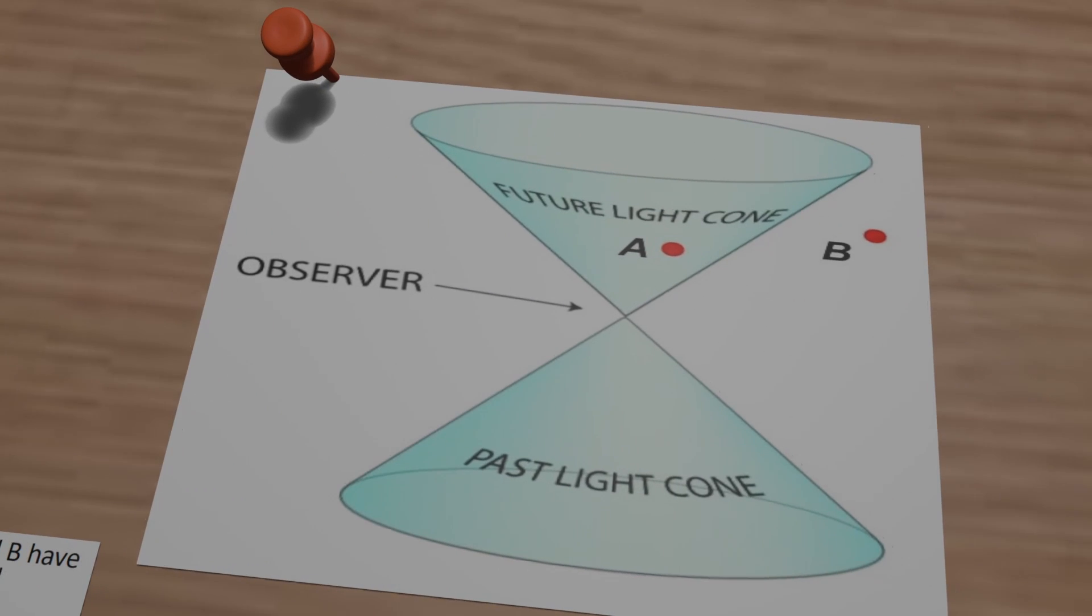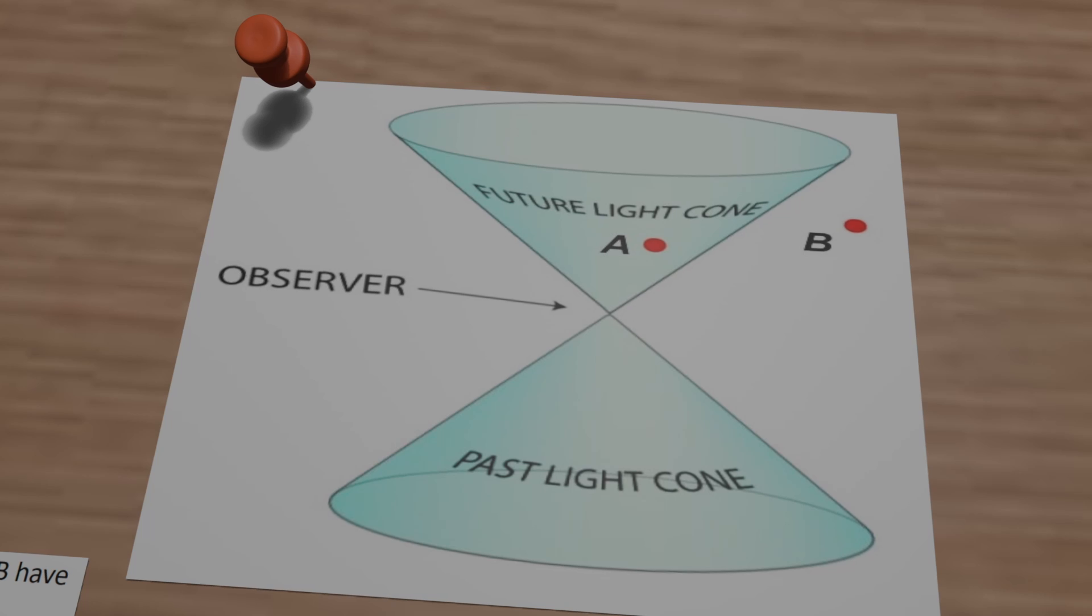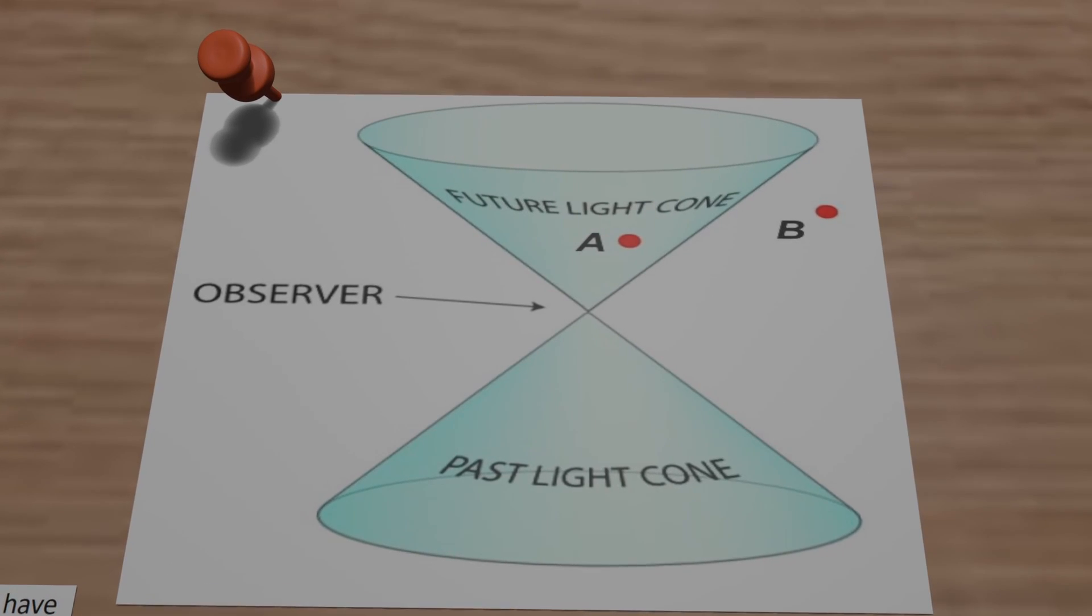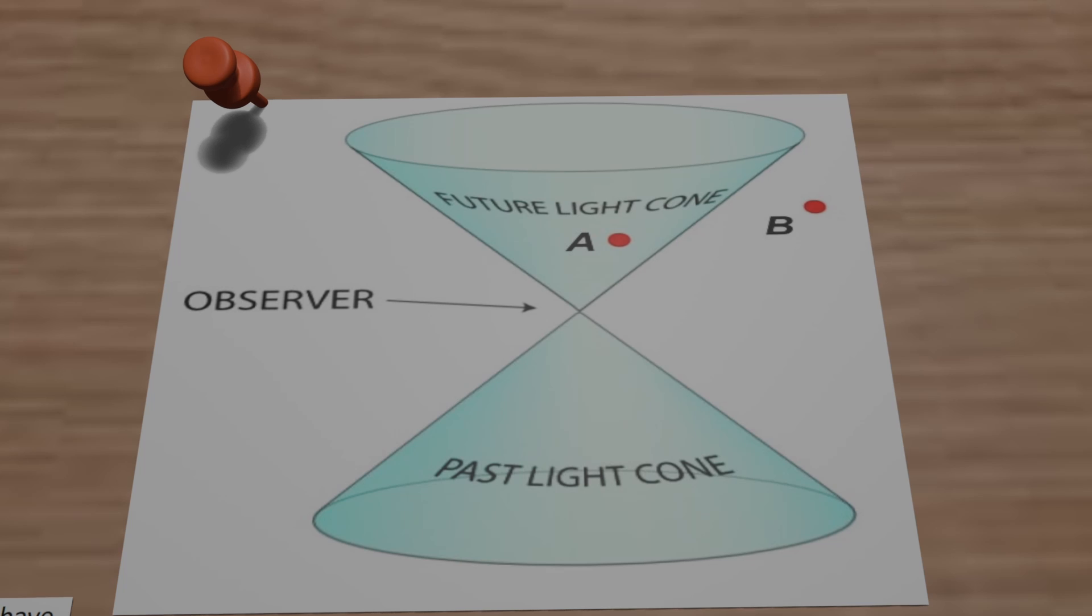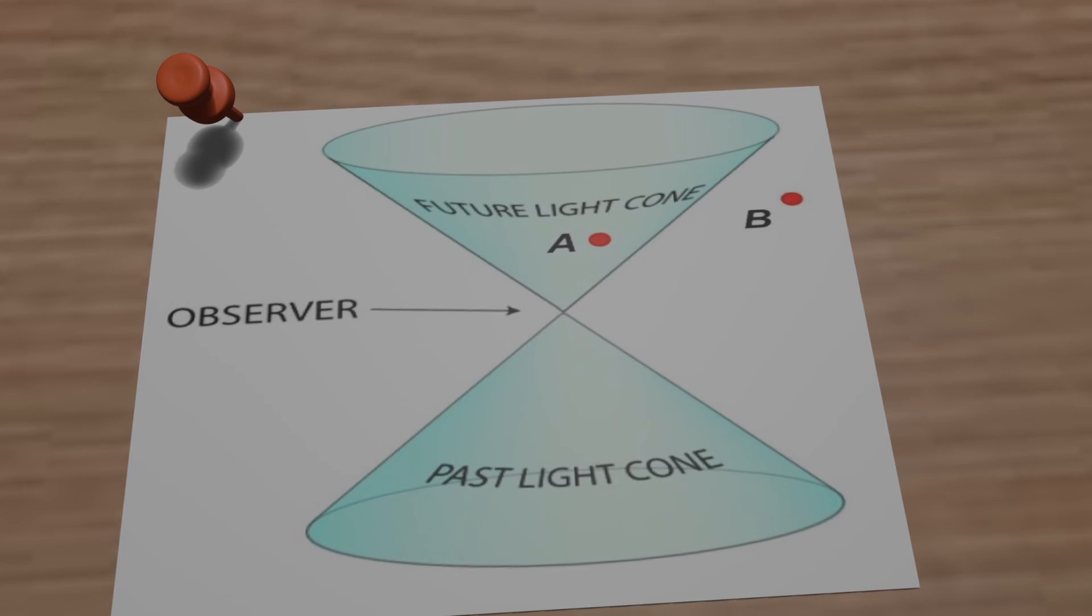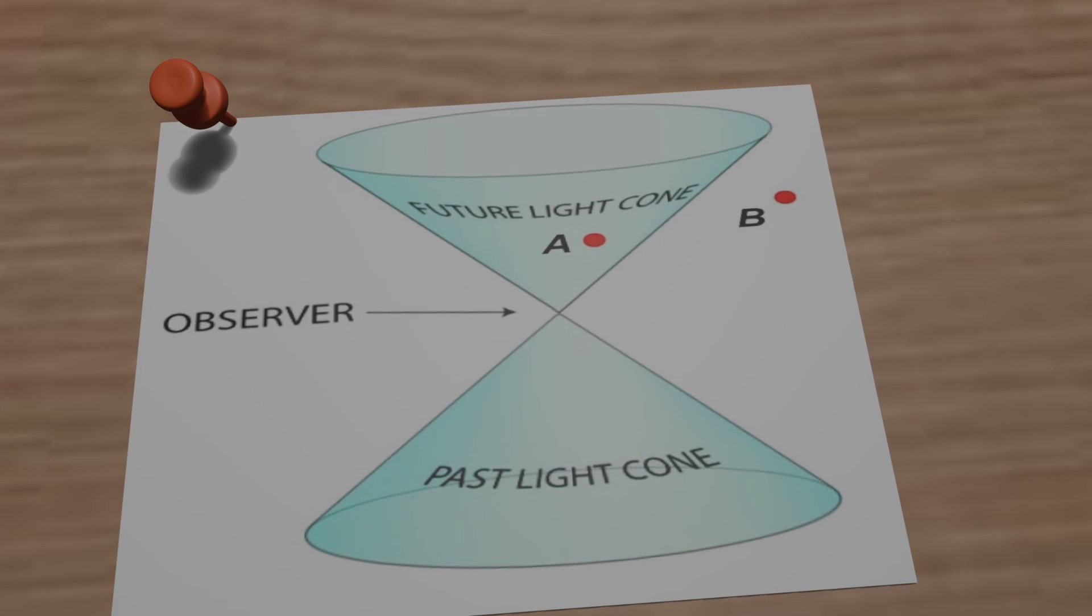And the locality loophole. This loophole dealt with the timing of the measurements made on the entangled particles. If the measurement on one particle could influence the measurement on another particle, even if the particles were far apart, this would violate the premise of locality.